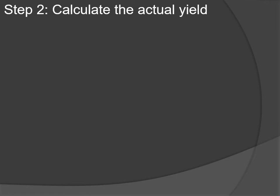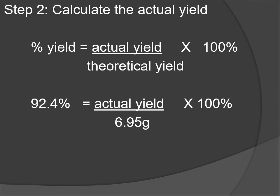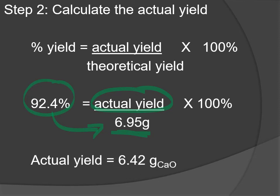As long as we know the percentage yield is consistent, we can use it. The theoretical yield is 6.95 grams, and we know the percentage yield is 92.4% every time. We're solving for the actual yield — essentially, what is 92.4% of 6.95 grams? You can take 6.95 and multiply by 0.924, and you end up with 6.42 grams of calcium oxide as your actual yield.